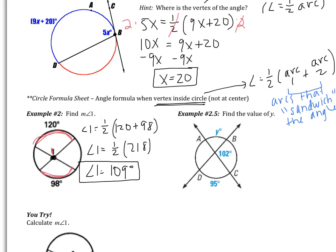Let's look at example 2.5. Again, we have an angle and two arcs — the angle equals one half the sum of the two arcs that sandwich it. Looking at angle 102, the two arcs that sandwich that angle are arc BC and AD. I know the angle but not either arc. Looking at arc Y and arc 95, those sandwich this little angle here. I see a straight line, so 102 and that angle are supplementary. So 180 minus 102 gives me 78. This little red angle is 78.